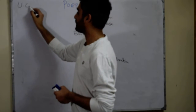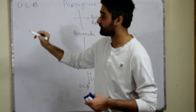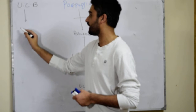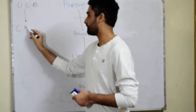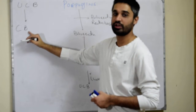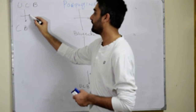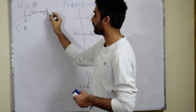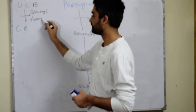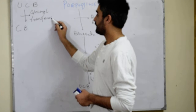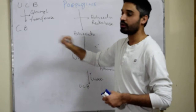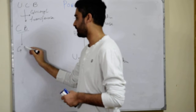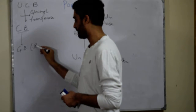This unconjugated bilirubin is now in the liver. Here it is conjugated to produce conjugated bilirubin. How is unconjugated bilirubin converted into conjugated bilirubin? With the help of an enzyme called glucuronyl transferase. Please remember the name of this enzyme — it is very important. This conjugated bilirubin then leaves the liver, goes to the gallbladder, and is stored there for a period of time.